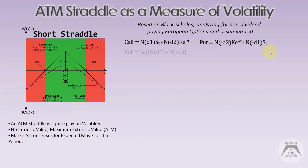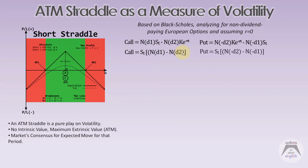For the at-the-money case, the stock price S and strike K are the same, so we can factor out one common value. The call simplifies to S × [N(d1) − N(d2)]. Similarly for the put, setting K equal to S and factoring out, we get S × [N(−d2) − N(−d1)]. We now have simplified formulas for both the call and put values.